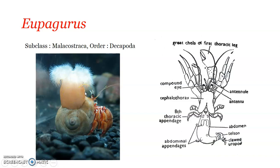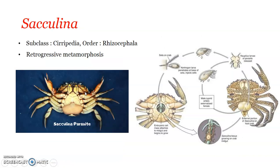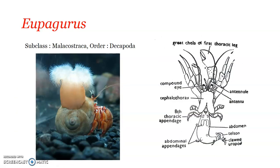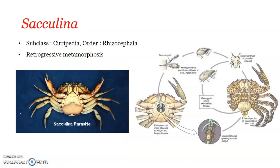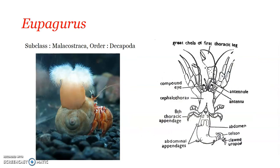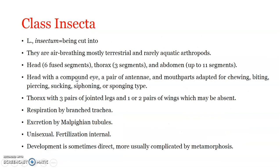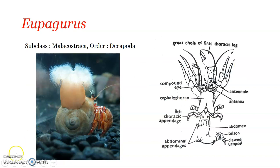That is about Eupagurus. We saw two examples under class Crustacea: Sacculina, which showed parasitic castration and extreme parasitism as it parasitizes decapod crustaceans, and Eupagurus, which shows a symbiotic association with sea anemones. This concludes the discussion on class Crustacea. Thank you.